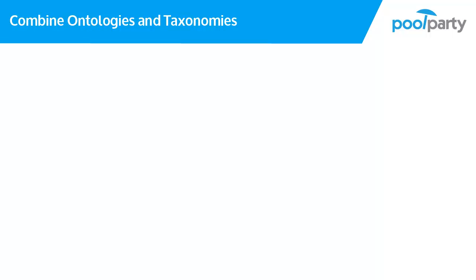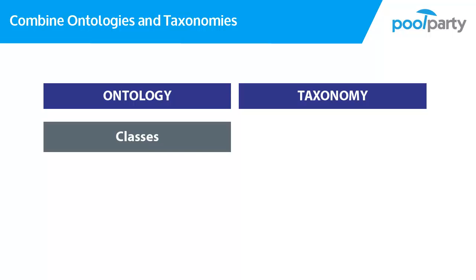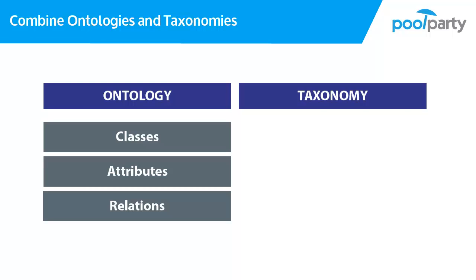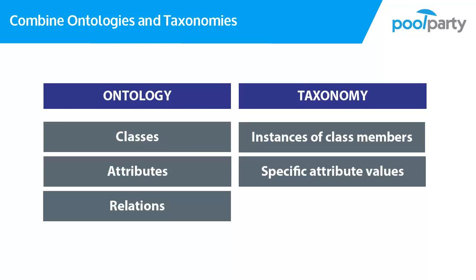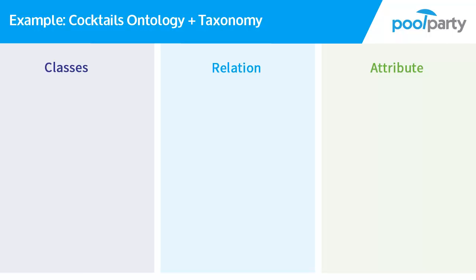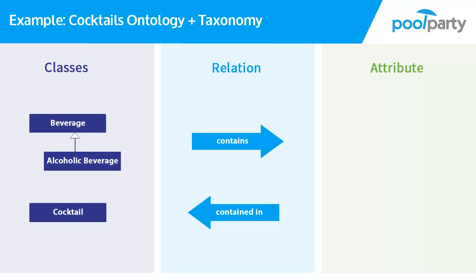The next step is to understand how ontologies and taxonomies work together. In the ontology, we describe classes and say which attributes and relations classes can have. In the taxonomy, we describe the actual instances or class members, the specific values of attributes, and the relations of instances to each other. In our example ontology, we have the classes cocktail and beverage with the subclass alcoholic beverage, relations between cocktail and beverage, the attribute image for all beverages, and the attribute percent alcohol per volume associated with the class alcoholic beverage.